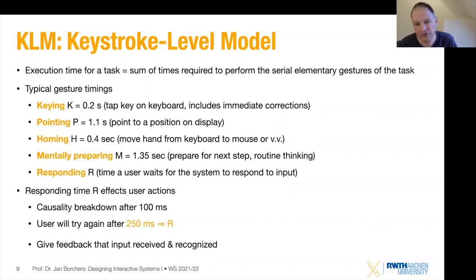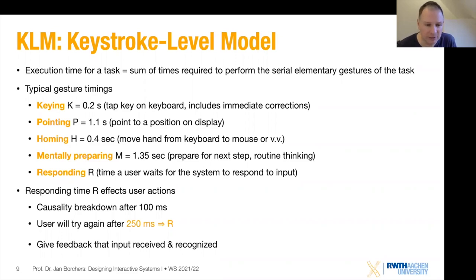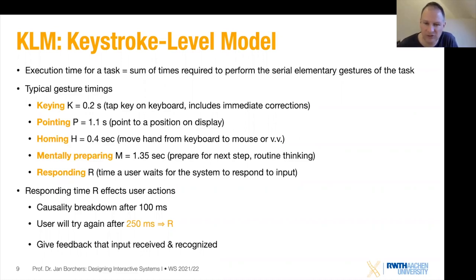The response time becomes even more critical because, as we know from the first lecture, after 100 milliseconds we have a causal breakdown — we stop believing that something happened in direct response to what we did. After about a quarter second, the user will try again. So this is where the system response time starts not just adding to the task but causing missed operations and user frustration. It's important to give feedback that input was received and recognized.